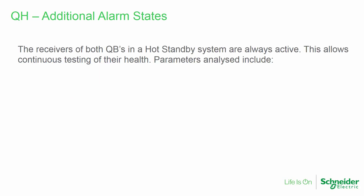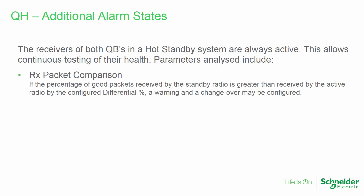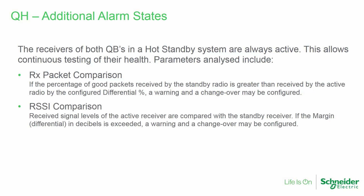The receivers of both QBs in a QH hot standby system are always active, allowing continuous testing of the health of both receivers. Parameters analyzed include RX packet comparison: if the percentage of good packets received by the standby radio is greater than that received by the active radio by a percent greater than the configured differential, a warning and a changeover may be configured. Also, RSSI comparison: received signal levels of the active receiver are compared with the standby receiver, and if the margin or differential in decibels is exceeded, a warning and a changeover may be configured.